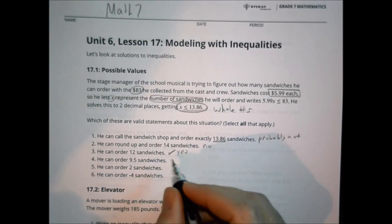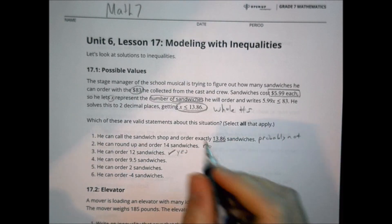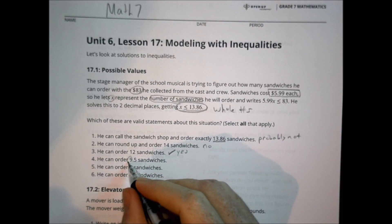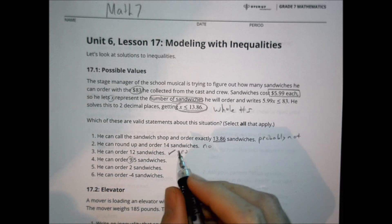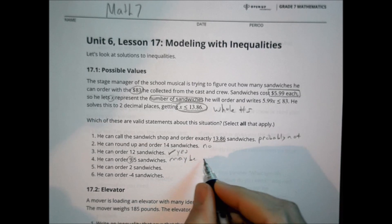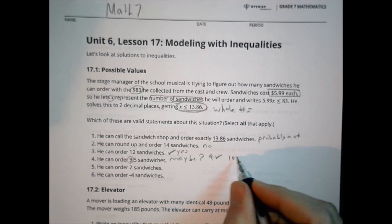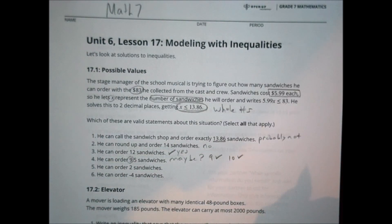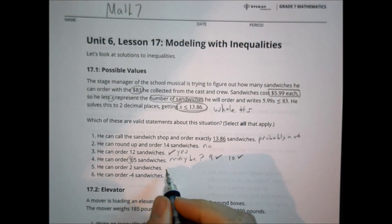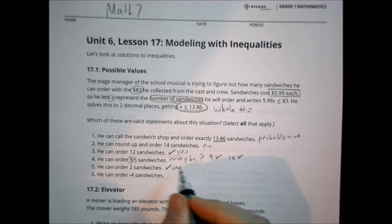Can he order 9.5 sandwiches? Well, he could certainly pay for 9.5, but will they sell him half of a sandwich? That's a maybe. Hard to say. Can he do 9? Yes. Can he do 10? Yes. Can he order 2 sandwiches? That would be a yes, he certainly could.